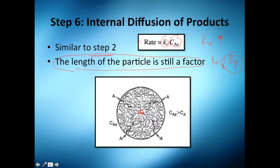This was the last diagram, but the correct one will be going out of the pellet. This is your pellet — you react it and you want to take out your product, let's say B, into the surface.